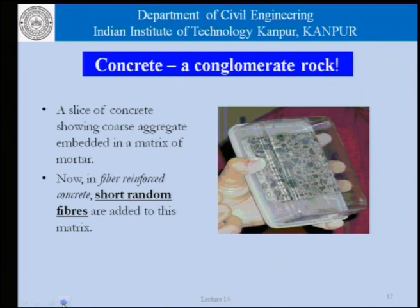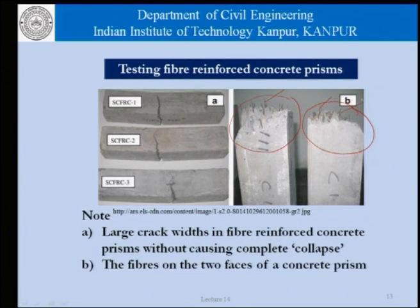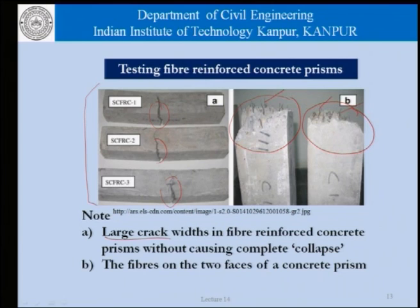Looking at a slice of concrete: in addition to coarse aggregate and mortar present in normal concrete, we also have short random fibers as part of the matrix in fiber reinforced concrete. This picture shows the face of a prism with fibers in the concrete matrix. We can see small fibers sticking out, and in these three pictures, the concrete prisms have been loaded and show large crack widths.